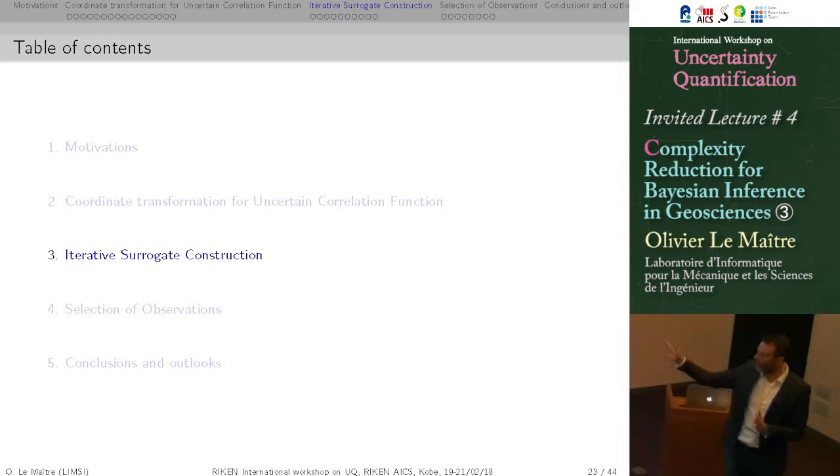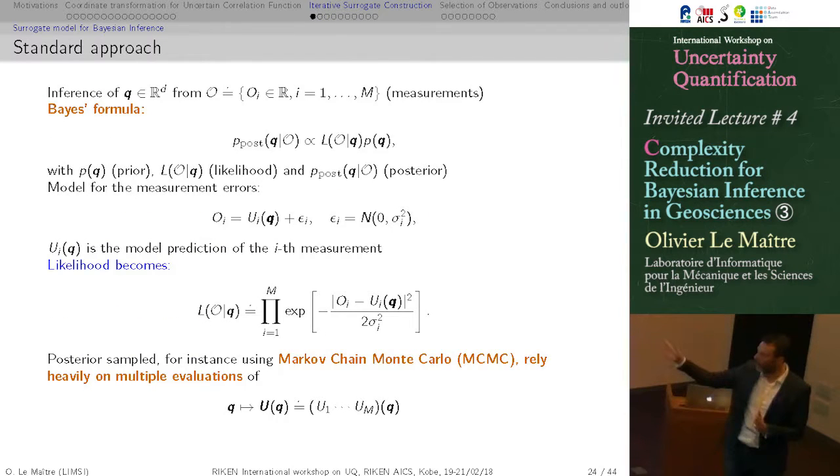So we see here that it's very critical to have techniques that are sufficiently flexible to introduce and deal with hyperparameters. That is also very important to build surrogates. And now I will discuss another point about the surrogate construction for the Bayesian inference.